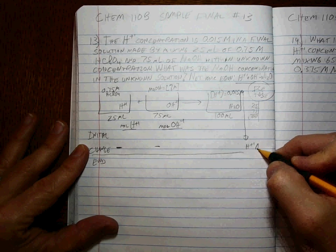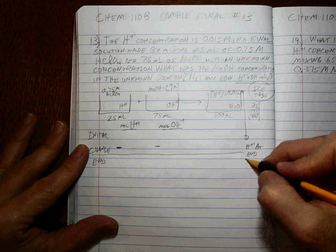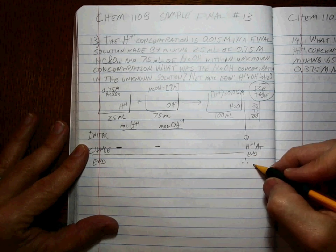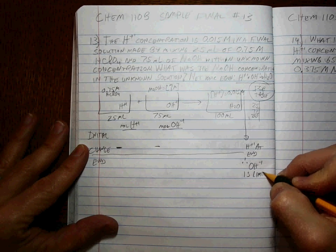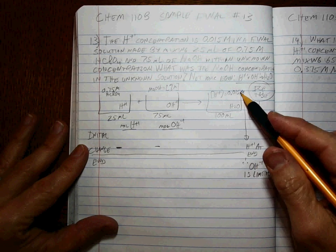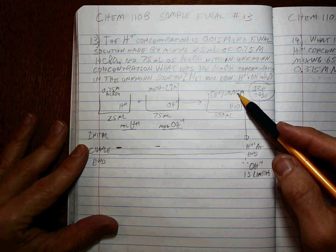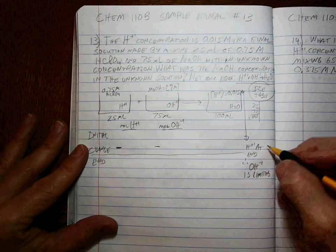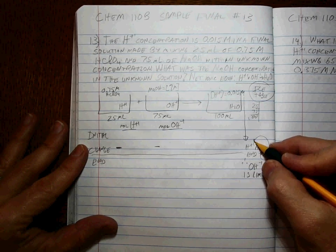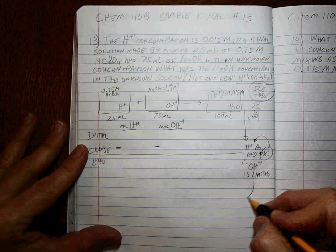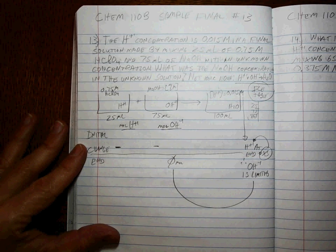There's one more piece of information: there's H+ at the end, therefore OH- is limiting. If you have H+ left over at the end, that means there is no hydroxide left at the end. This is the excess, which means OH- is limiting, so there's zero moles of hydroxide left.